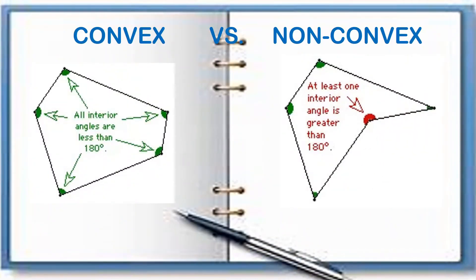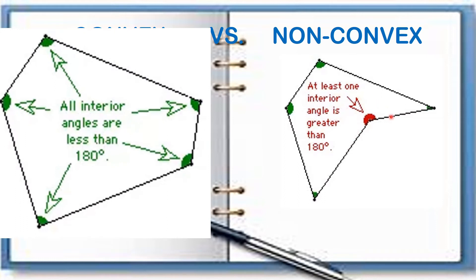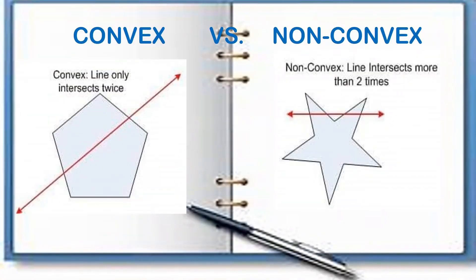A polygon is either convex or non-convex. If all interior angles measure less than 180 degrees, then it is a convex polygon. But if at least one interior angle is greater than 180 degrees, then it is a non-convex or concave polygon. Another way to check: if a line drawn through the polygon intersects it only twice, it is convex; if more than twice, it is non-convex.